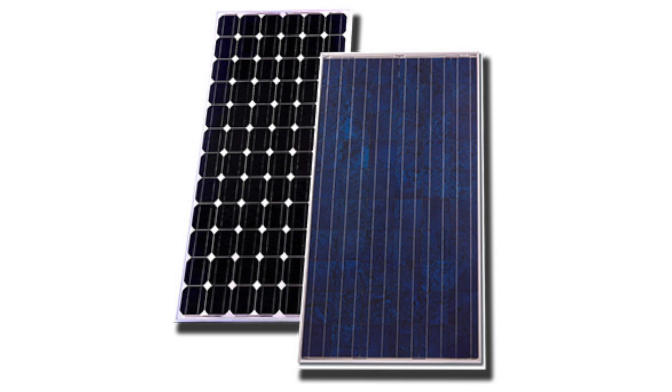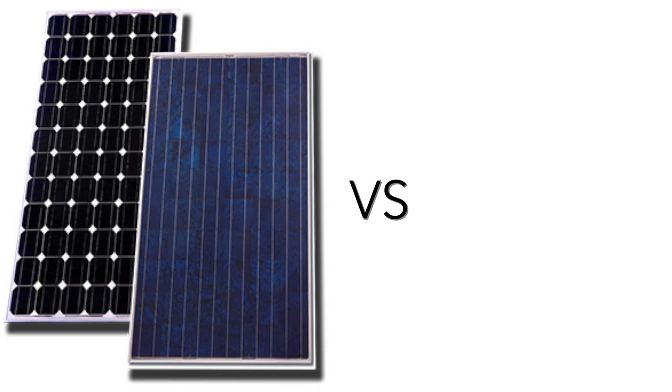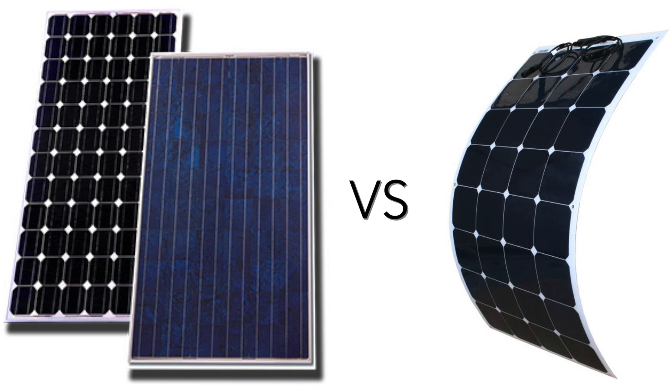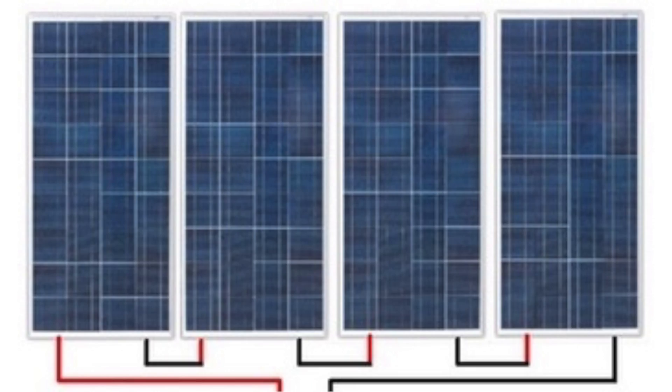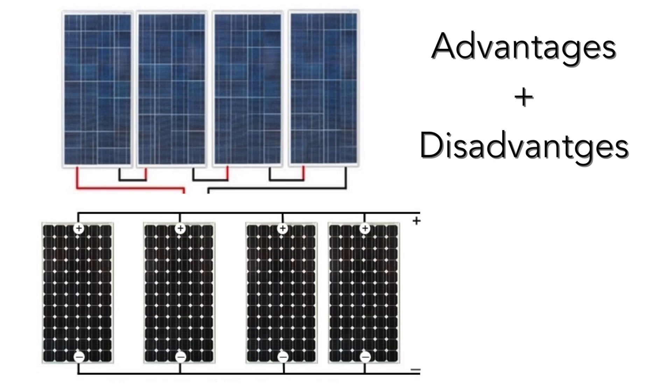When it comes to solar panels, I'm going to talk about the difference between monocrystalline and polycrystalline, which are the tried and true hard framed solar panels. I'm also going to talk about the difference between those traditional panels and the newer flexible thin film panels. And finally, I'm going to talk about how to wire your solar panels, whether you should wire them in series or parallel, and some advantages and disadvantages of each of those options.